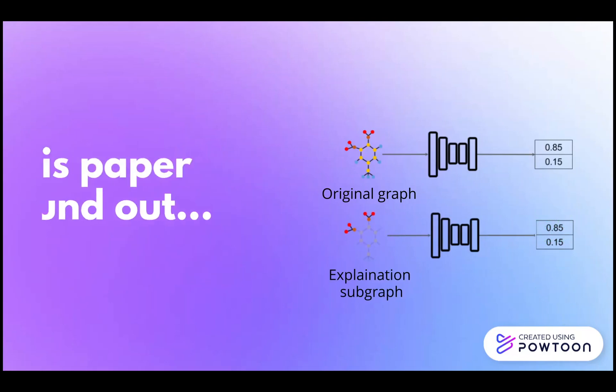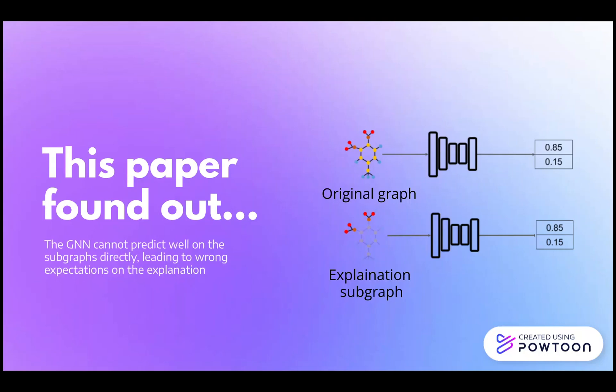However, this paper revealed an unexpected finding: the GNN model cannot make the correct prediction using the NO2 or NH2 compound alone.